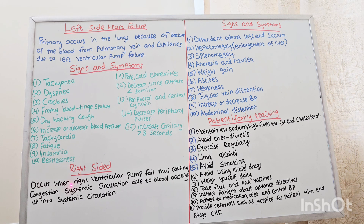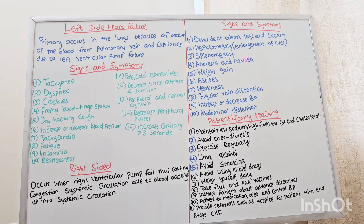Right-sided heart failure occurs when the right ventricular pump fails, causing congestion in the systemic circulation due to blood backing up into systemic circulation. Signs and symptoms include dependent edema in the legs and sacrum, hepatomegaly — which is enlargement of the liver — splenomegaly — which is enlargement of the spleen — anorexia, nausea, weight gain due to fluid overload, ascites, weakness, jugular vein distension, increased or decreased blood pressure, and abdominal distension.